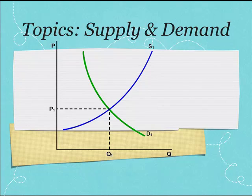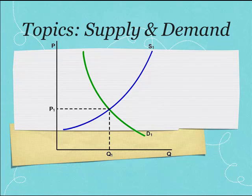Complete the 2.04 discussion-based assessment at the end of the module so you can make sure you understand all the content in the module. For Assignment 2.05, four hand-drawn graphs are required. Make sure to label all the lines, the axes, and the equilibrium price and quantity.